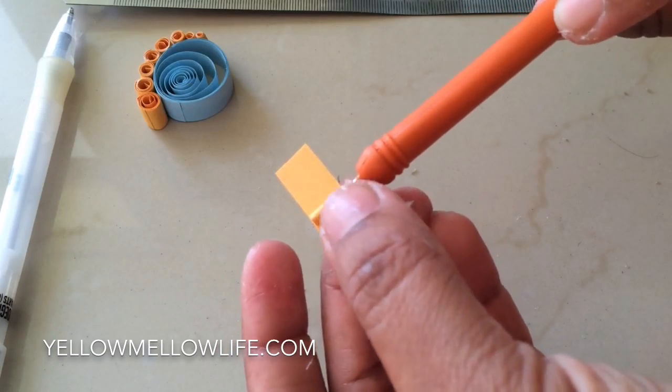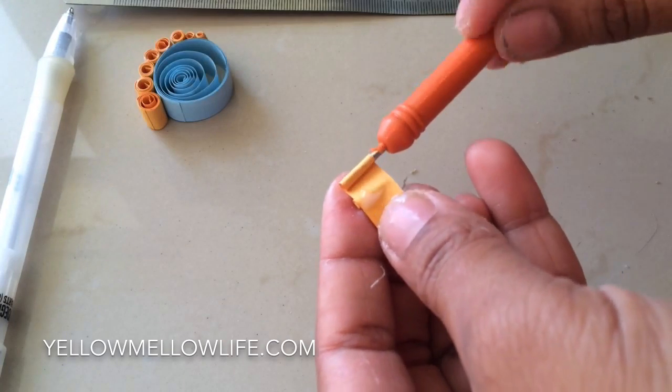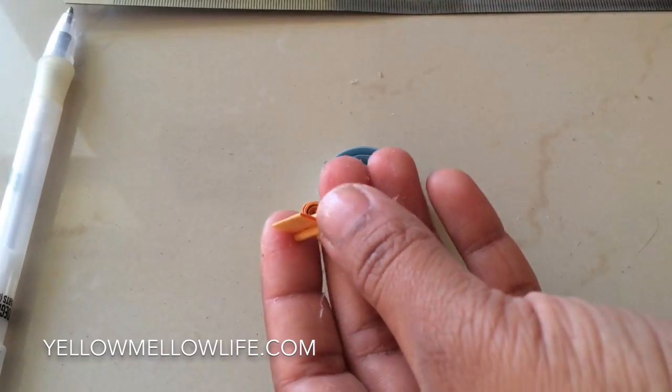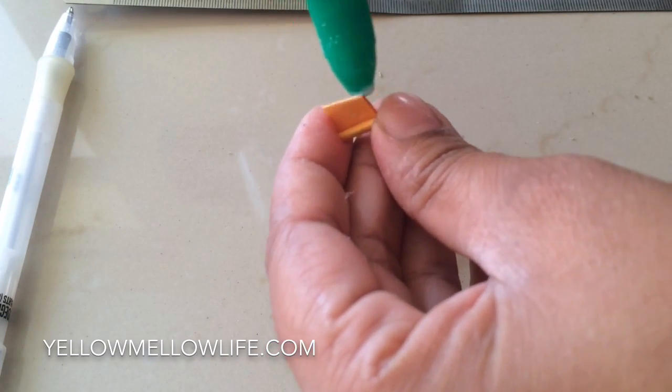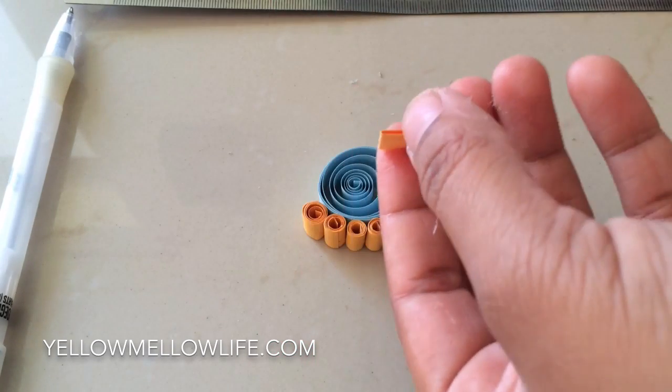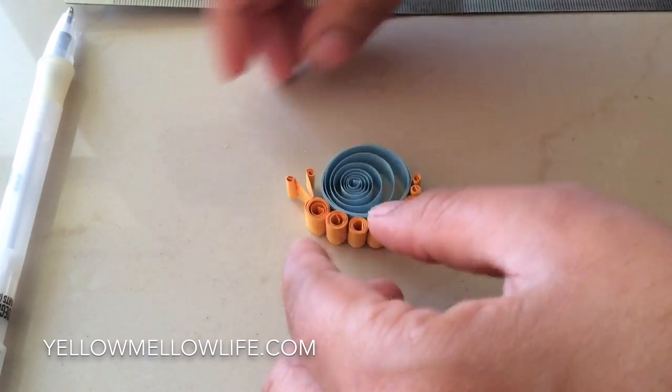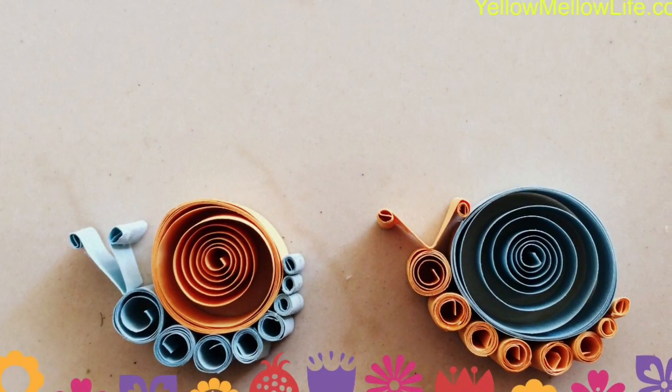So wherever the glue was, I'll stop it there and then hold it and let it dry. So I get a shape like this. And I'm just going to put some glue towards the crease and just attach to the front part. And that is my snail antenna.